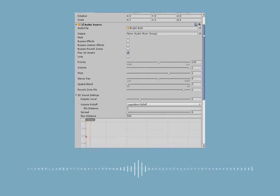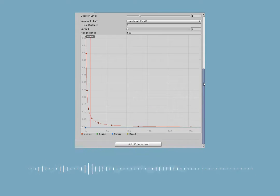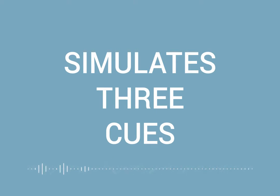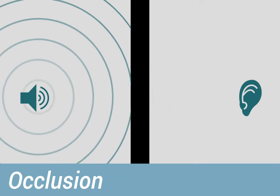Unlike Unity's stock audio system, Propagate simulates these three important cues: Occlusion, Diffraction, and Perception.